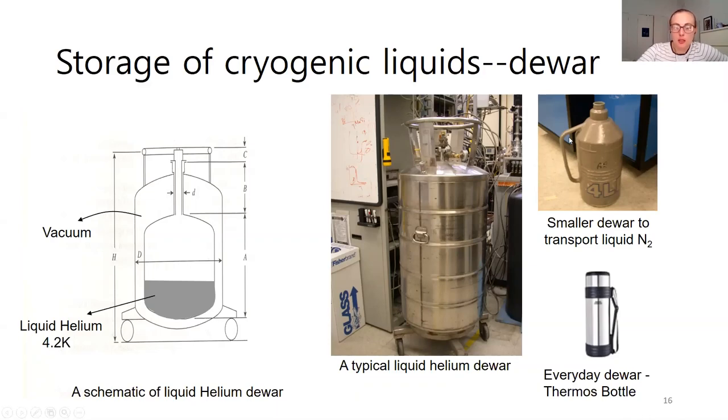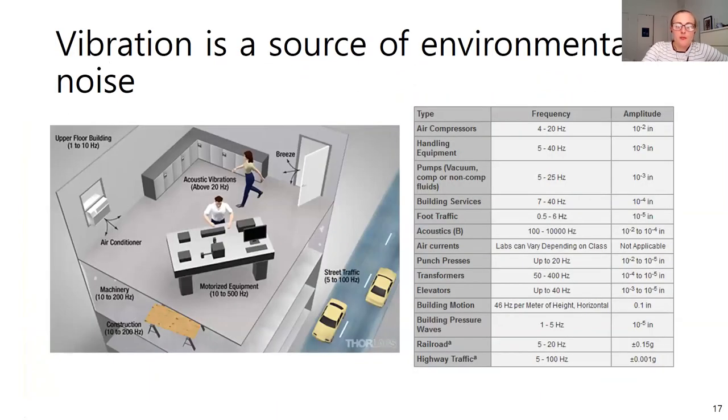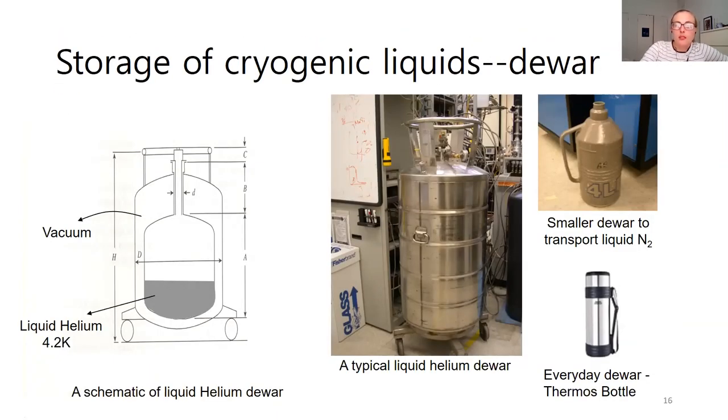They're typically transported and supplied in these large dewars that are rolled off of air gas supply company. If you need to get some liquid nitrogen for your measurement there's smaller dewars that are available in labs. An everyday type of dewar if you want to keep a hot drink hot or a cold drink cold would be a thermos. It has the same concept of having this vacuum chamber around where it's storing your liquid inside. That's what I wanted to go over with the vacuum pumps and working with these cryogenic liquids. Are there any questions about that?